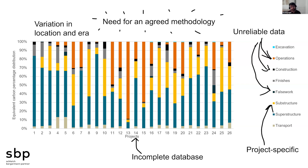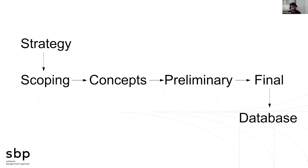A final thought: location can be really important. A project currently under construction in the office is a cable car station in Europe accessible only by helicopter — infrastructure like that is particularly hard to build, and benchmarking it against other projects is something we need to be cognizant of. In conclusion, embodied carbon is a tool we can use at each stage of a project. The case studies show how it can be applied, and while the database is useful, it needs to be interrogated for accuracy, robustness, and all the flaws in cataloging.